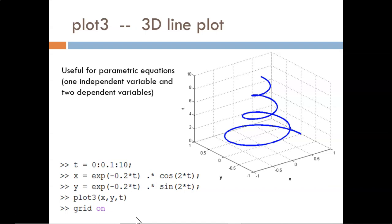This will produce an image like what you see on the right. These types of plots are useful for parametric equations, in which we have one independent variable or input and two dependent variables or outputs. In this example, T is created as an independent vector.